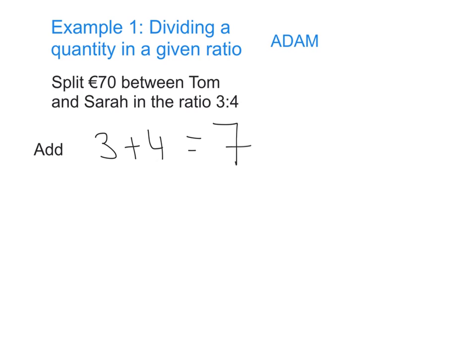Moving on with Adam, we are now going to go on to the next part of the name, which is D, and D stands for divide. So what we need to do in this section is we're going to take our answer from the previous section—that's going to come down and help us—and we are going to divide 7 into the amount that we're trying to split up, which is 70 euro.